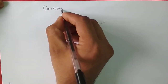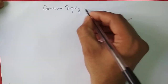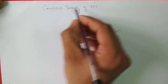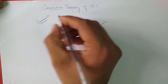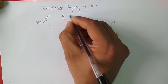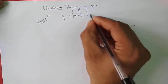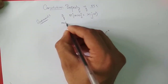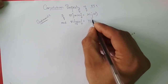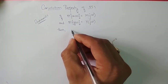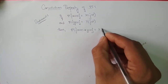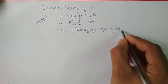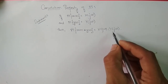We will discuss the convolution property of Fourier transform. Its statement says that if the Fourier transform of x(t) is X(jω) and the Fourier transform of y(t) is Y(jω), then the Fourier transform of x(t) convolved with y(t) is equal to X(jω) multiplied with Y(jω). So convolution in the time domain is equal to multiplication in the frequency domain.